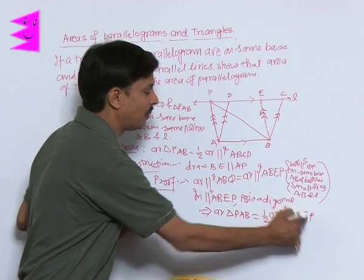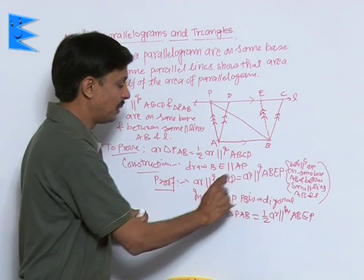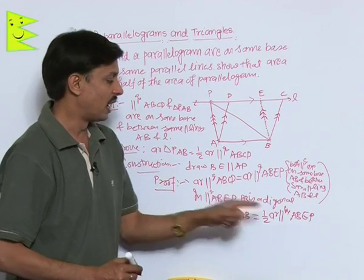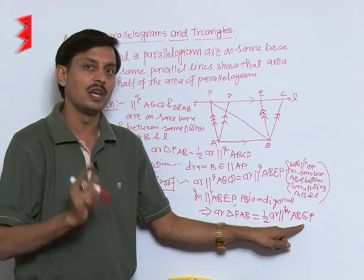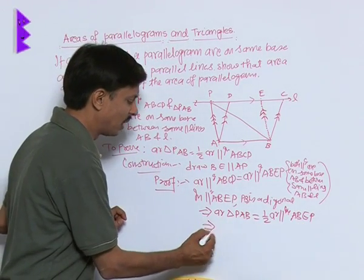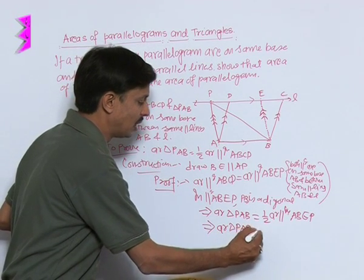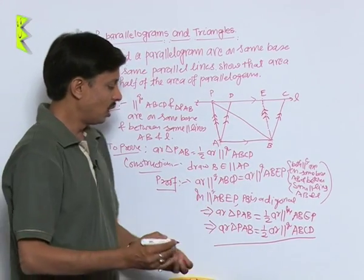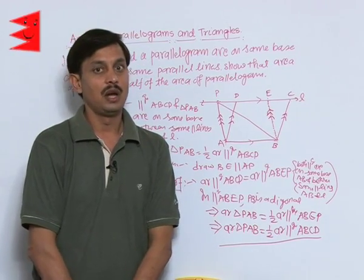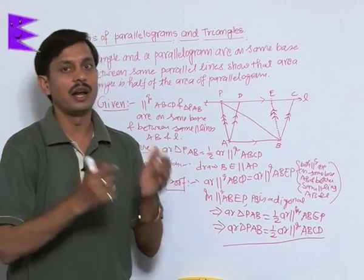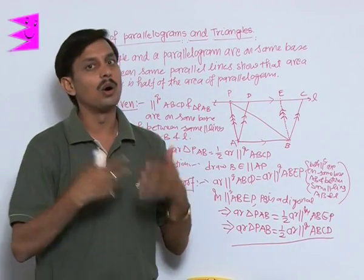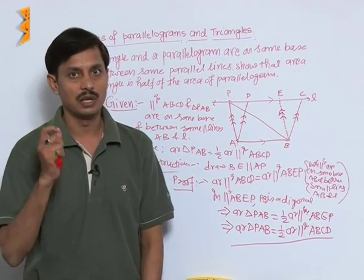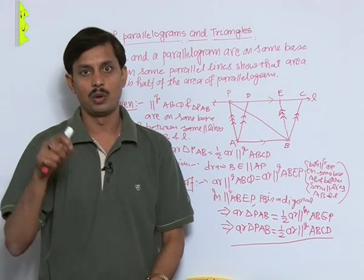But the area of parallelogram ABEP is the same as the area of parallelogram ABCD, because both parallelograms are on the same base and between the same parallel lines. So in place of the area of parallelogram ABEP, I can substitute the area of parallelogram ABCD. Conclusion: area of triangle PAB equals half of the area of parallelogram ABCD. An important conclusion: if a triangle and a parallelogram — or rectangle, rhombus, or square — are on the same base and between the same parallel lines, then the area of the triangle is half the area of the given figure.